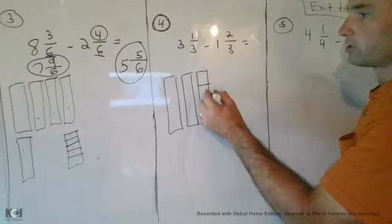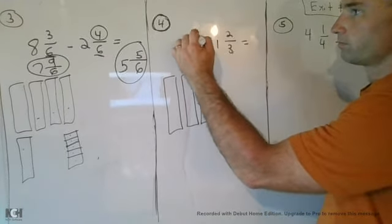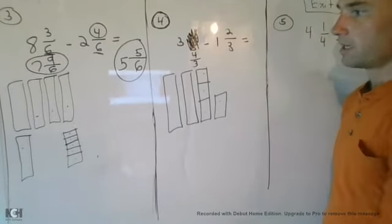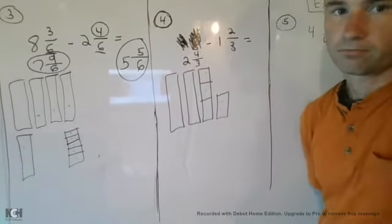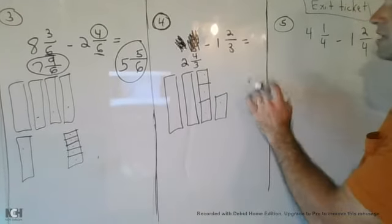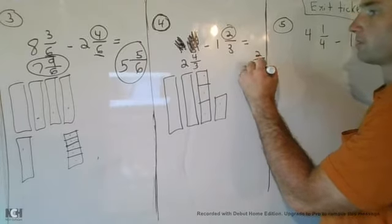By breaking up this whole number, I need to break it into thirds. Okay, now I have one, two, three, four thirds, and I have two holes.